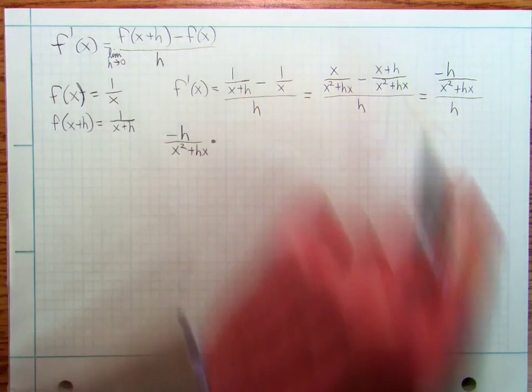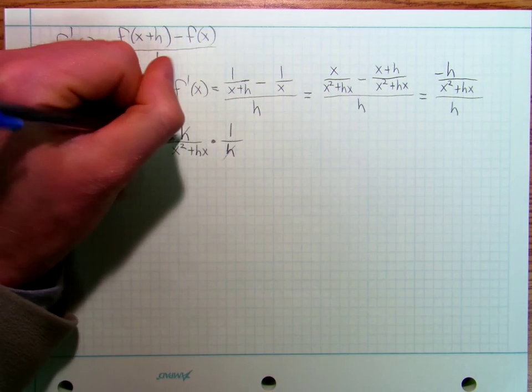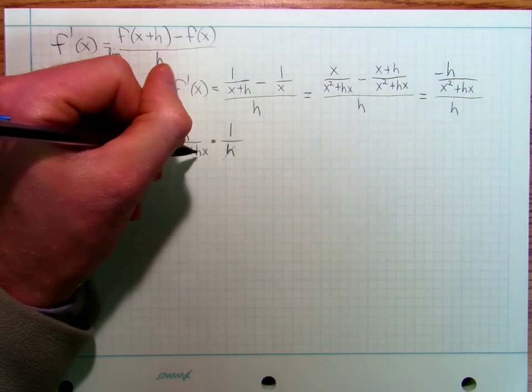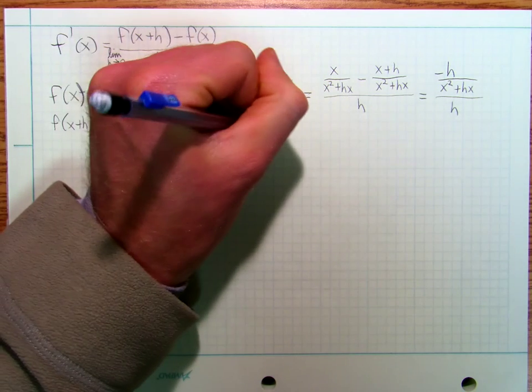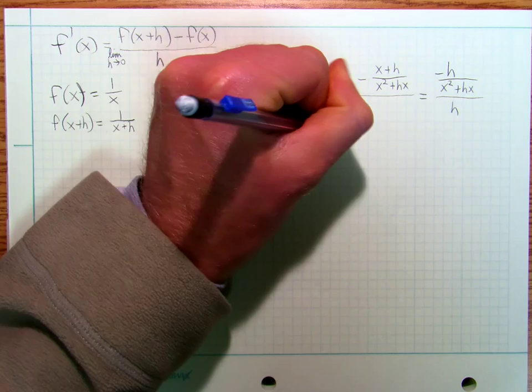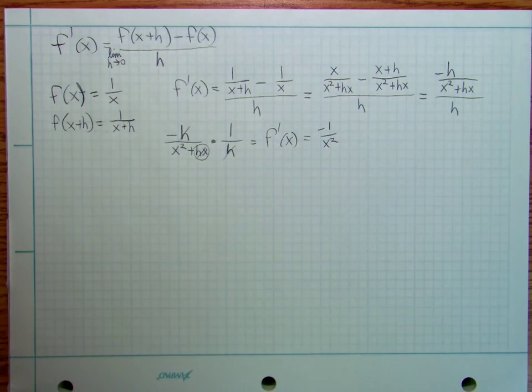Instead of dividing by h, I'm going to multiply it by 1 over h. That h and that h are going to cancel out. Because h is really, really close to zero, that's going to cancel out. And I'm going to get f prime of x is equal to negative 1 over x squared.